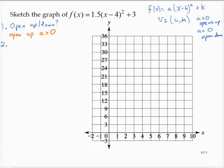Second question we're going to ask ourselves is what's the vertex? Since the function is in that vertex form, x minus 4 squared plus 3, the vertex is (4, 3).